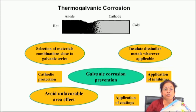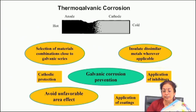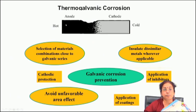You have to avoid the unfavorable area effect. Whenever there is the possibility of galvanic coupling, choose an anode with a much higher area than that of the cathode — this is beneficial because it will reduce the current density and as a result the corrosion rate of the anode.